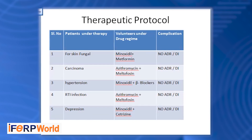Our third patient is a hypertension patient under therapy. We gave a combination of beta-blocker drugs — such as propranolol, atenolol, and isminol — which reduce blood pressure, combined with Minoxidil. Minoxidil and metformin lower blood sugar and have no adverse effects or drug interactions. Further, for the RTI infection or depression patient, we gave a combination of two drugs, also with no adverse effects or drug interactions.